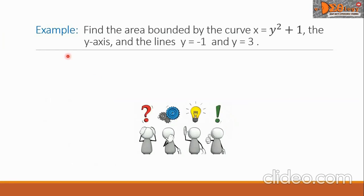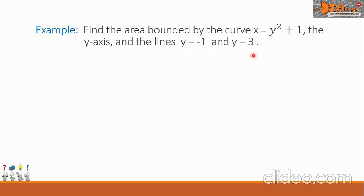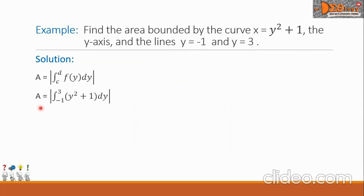Example: Find the area bounded by the curve x equals y squared plus 1, the y-axis, and the lines y equals negative 1 and y equals 3. First, let us write the formula for the area, then substitute the corresponding values. So we have A equals the absolute value of the definite integral from negative 1 to positive 3 of y squared plus 1 dy.